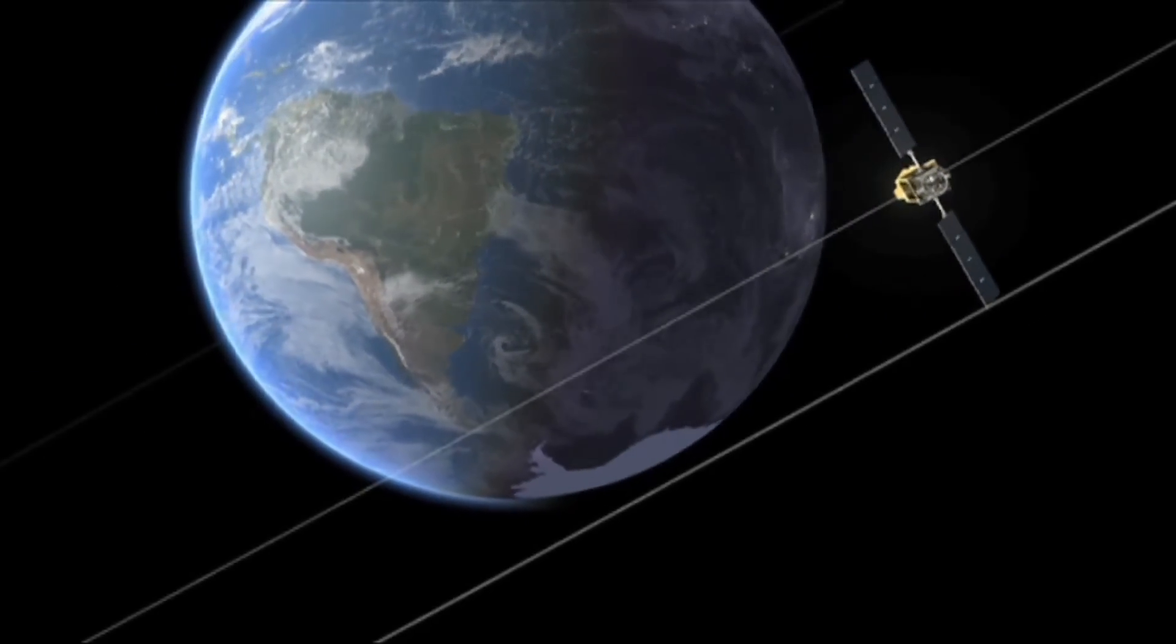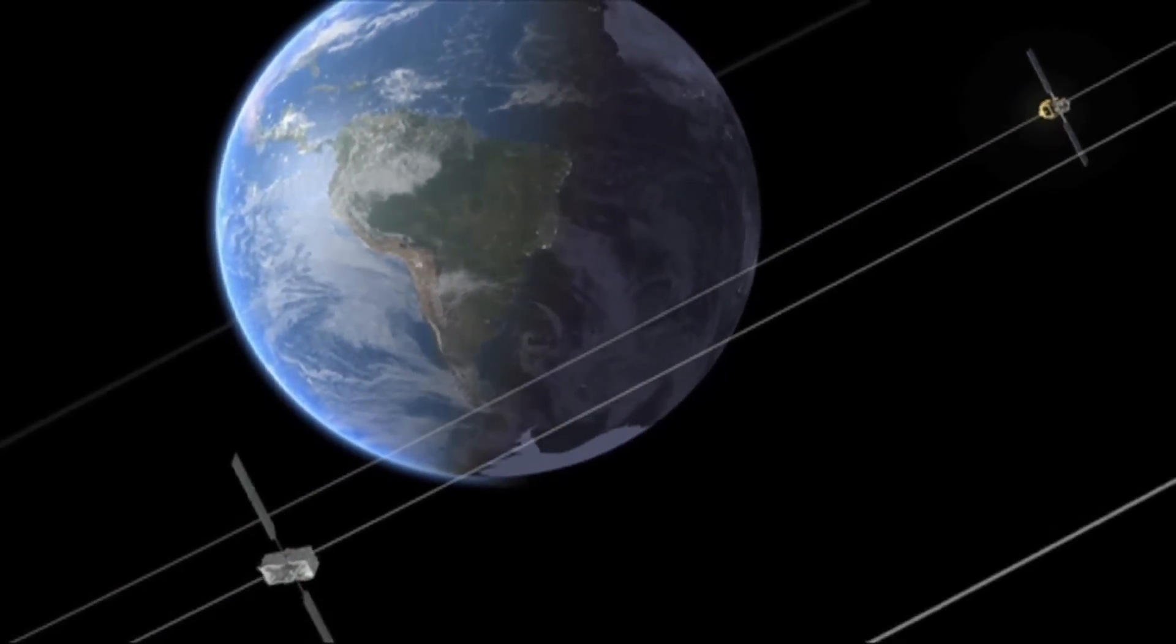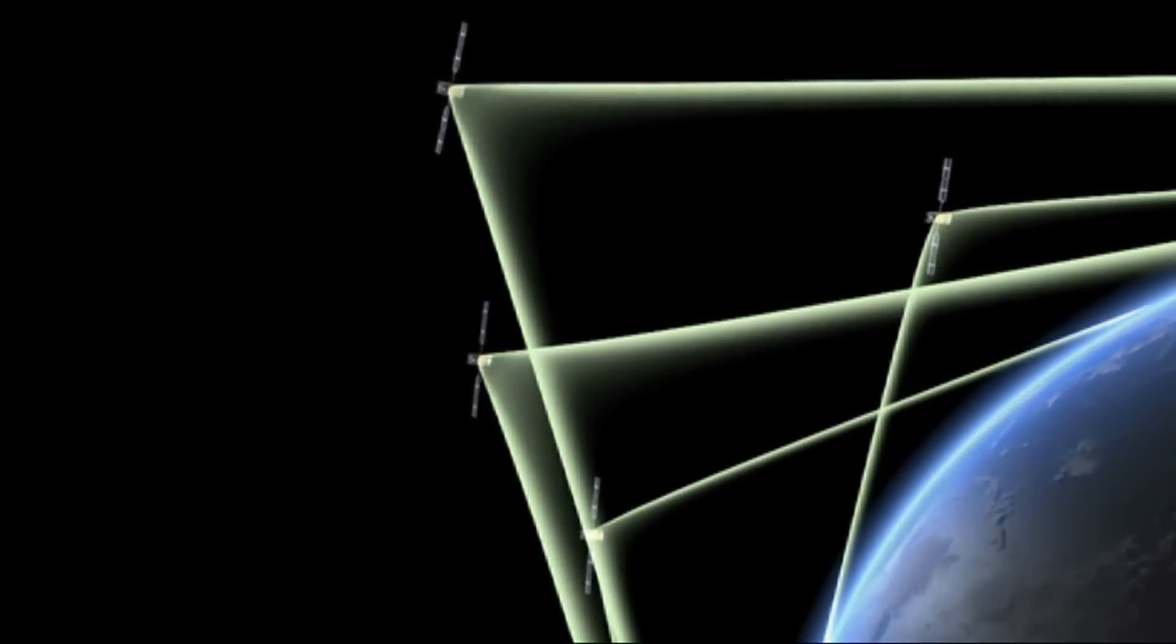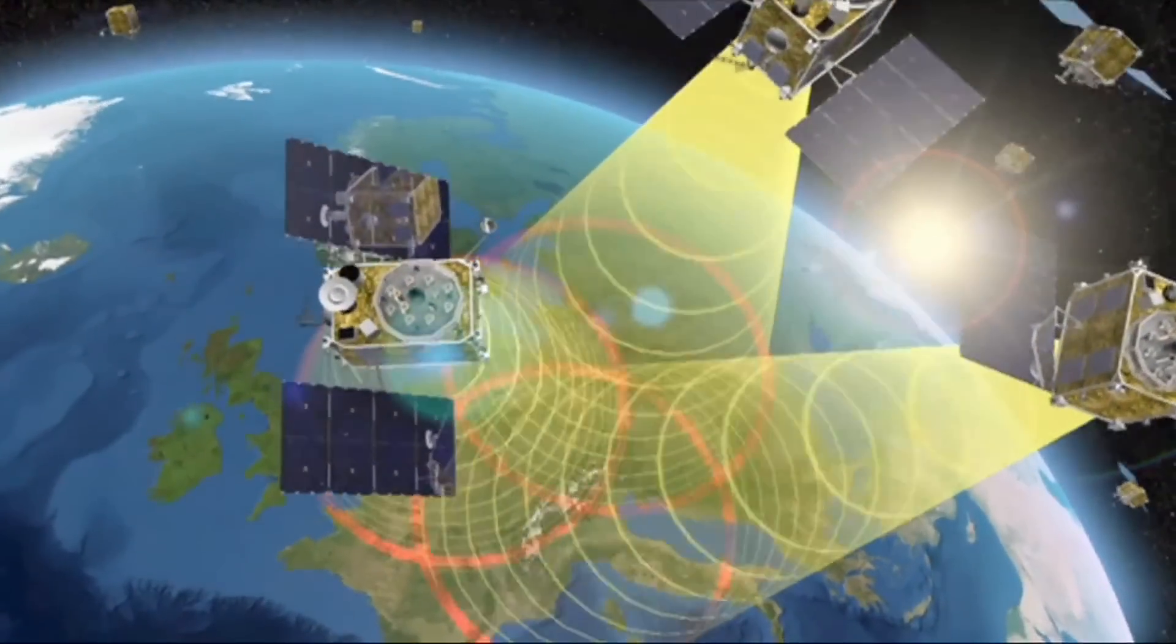Nowadays, there are over 700 operational satellites orbiting above our heads, sending the signals for our phones, television, weather information and GPS.